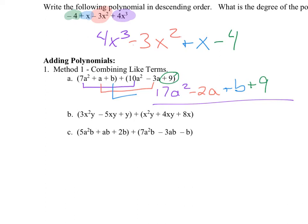Now for example B: I have x squared y and an x squared y, so 3 plus 1 gives me 4x squared y. Then I have xy and xy: minus 5 plus 4 gives me minus 1xy. I have just a 'y' with nothing matching on the other side, so that's plus y. And 8x is all by itself.